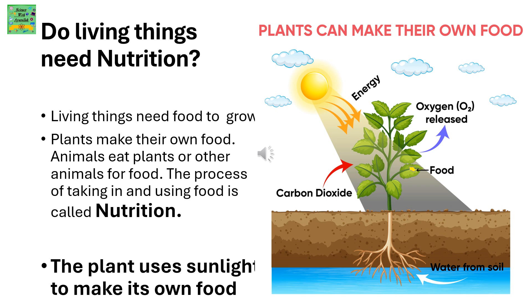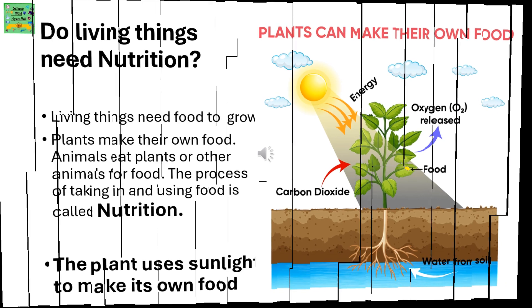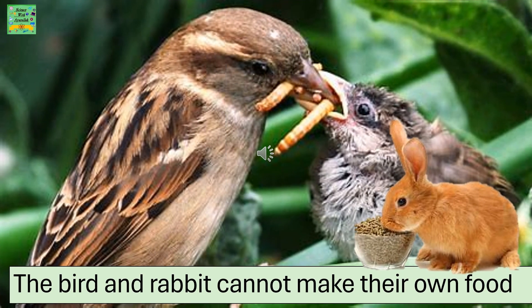Do living things need nutrition? Living things need food to grow. Plants make their own food. Animals eat plants or other animals for food. The process of taking in and using food is called nutrition. The plant uses sunlight to make its own food. The bird and rabbit cannot make their own food.